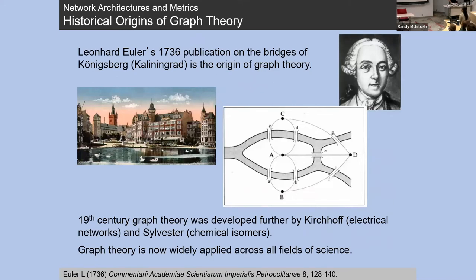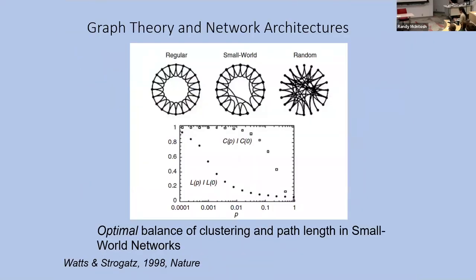Graph theory goes way back — it wasn't developed for the brain. It was developed for many other things long before neuroscience came along. Watts and Strogatz popularized some of the ideas around graph theory, particularly having to do with complex systems — the idea of small world networks and the capacity of these networks to integrate information, showing that complex networks with small world architecture have a higher capacity to integrate information than systems that have either a regular connectivity pattern or a completely random one. That led to an explosion of applications of graph theory.